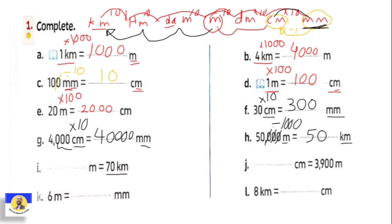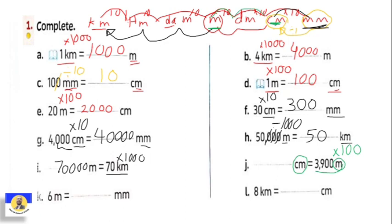Letter i: seventy kilometers — we want to change to meters. Seventy kilometers, multiply by one thousand, so it will be seventy thousand meters. Next: three thousand nine hundred meters to centimeters. From meter to centimeter we multiply by one hundred — two steps. So put extra two zeros: three thousand nine hundred becomes three hundred ninety thousand centimeters.